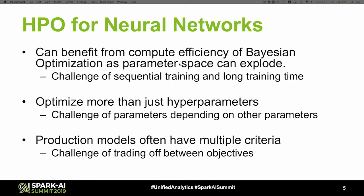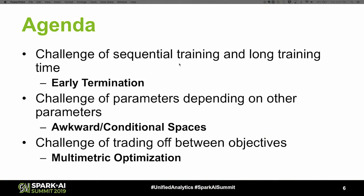Often when you want to take a model to production, you have competing metrics. If you want to take an image classifier and put it behind a real-time API, you don't just care about accuracy — you also care about how fast the model makes an inference. You don't want a user waiting two seconds while your model makes a decision. If you can give up very little accuracy and get something much faster, but you still have multiple metrics. This sets up the agenda: early termination addresses sequential training and long training times; conditional spaces address parameter dependencies; and multi-metric optimization addresses trading off between objectives.